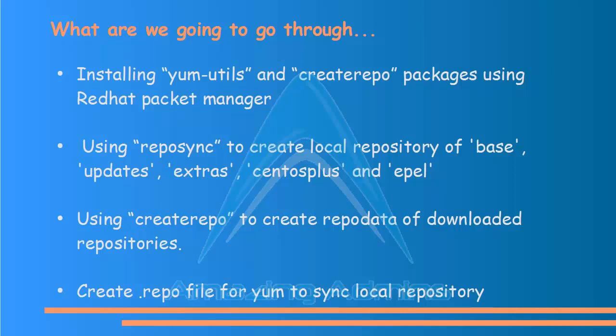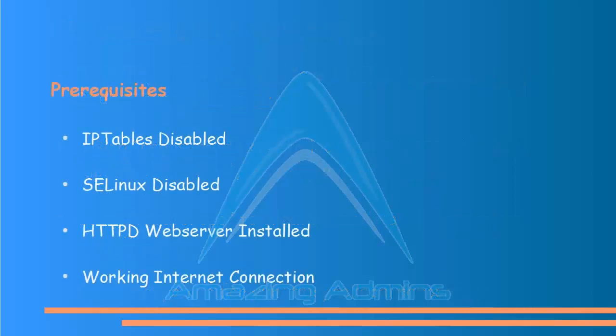After that, we'll use the CreateRepo command to create the repo data — that is, a list of the RPM files available in the repository. We'll also create a .repo file so that YUM recognizes the location of the local repository. Before continuing, we need to disable iptables and have a working web server so that the local repository is available on the web server.